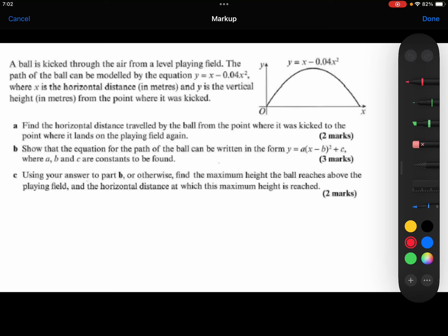Make sure you have your red pen ready to make corrections. A ball is kicked through the air from a level playing field. The path of the ball can be modeled by the equation y equals x minus 0.04x squared, where x is the horizontal distance in meters and y is the vertical height in meters from the point where it is kicked.